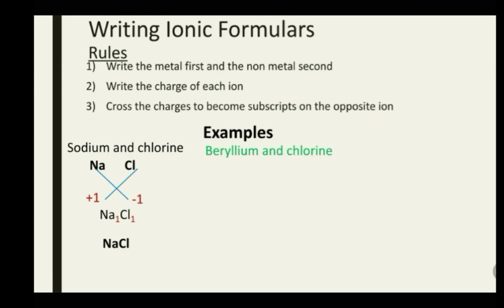Next: beryllium and chlorine. Their symbols are Be and Cl respectively. Be is the metal so it's written first. The charge of Be is +2 and that of Cl is -1. Crossing them to the opposite ion results in a compound where Be has a subscript of 1 and Cl has a subscript of 2. The 1 is ignored, so we get BeCl₂.